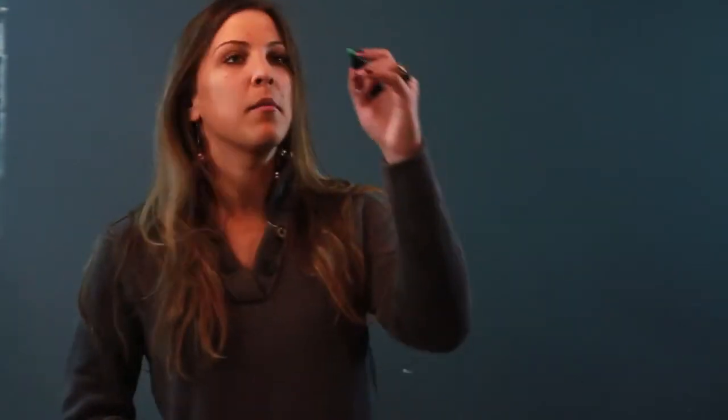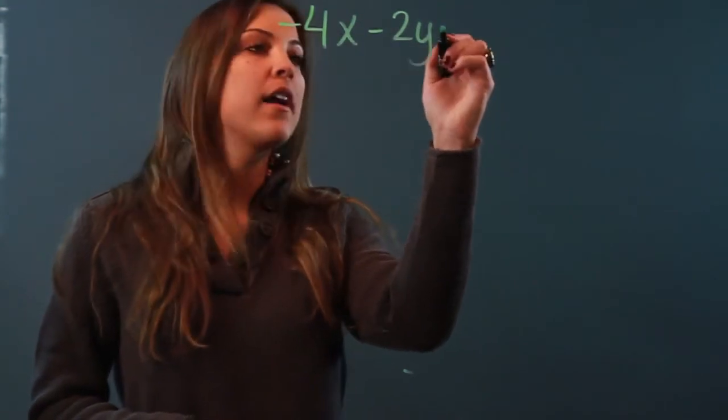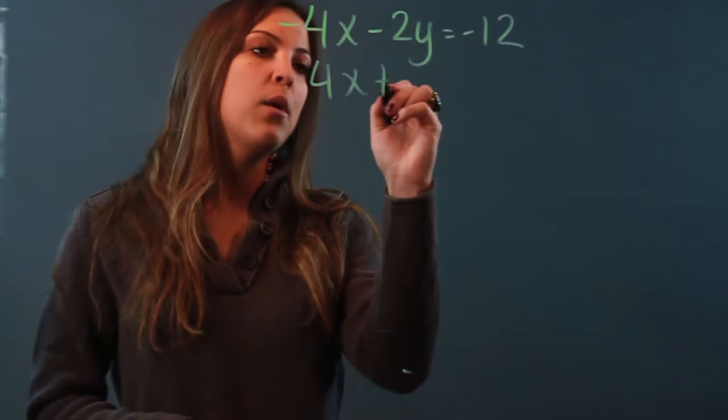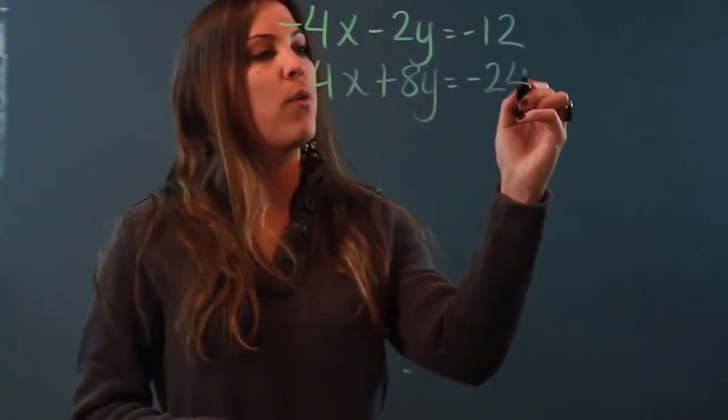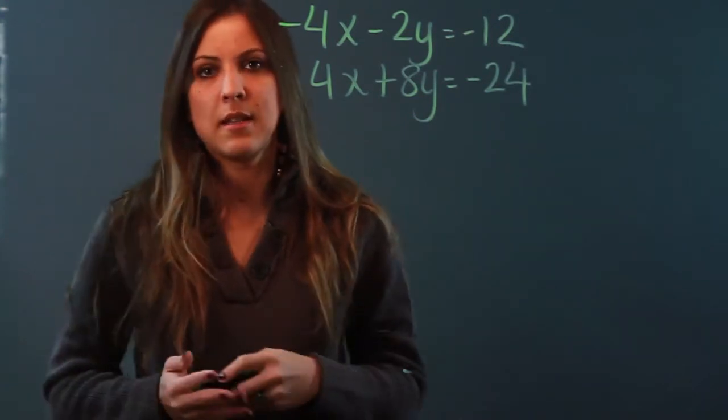So if you are given a system such as negative 4x minus 2y equals negative 12 and 4x plus 8y equals negative 24 and you're asked to solve it, you would not want to solve this system by substitution.